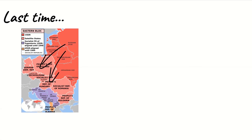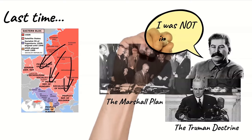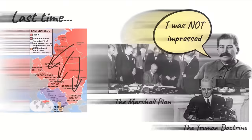Last time we were looking at the expansion of Soviet influence in Eastern Europe. Today we're going to be taking a look at the Western response to Stalin's expansion, namely the Truman Doctrine and the Marshall Plan and Stalin's response to those.